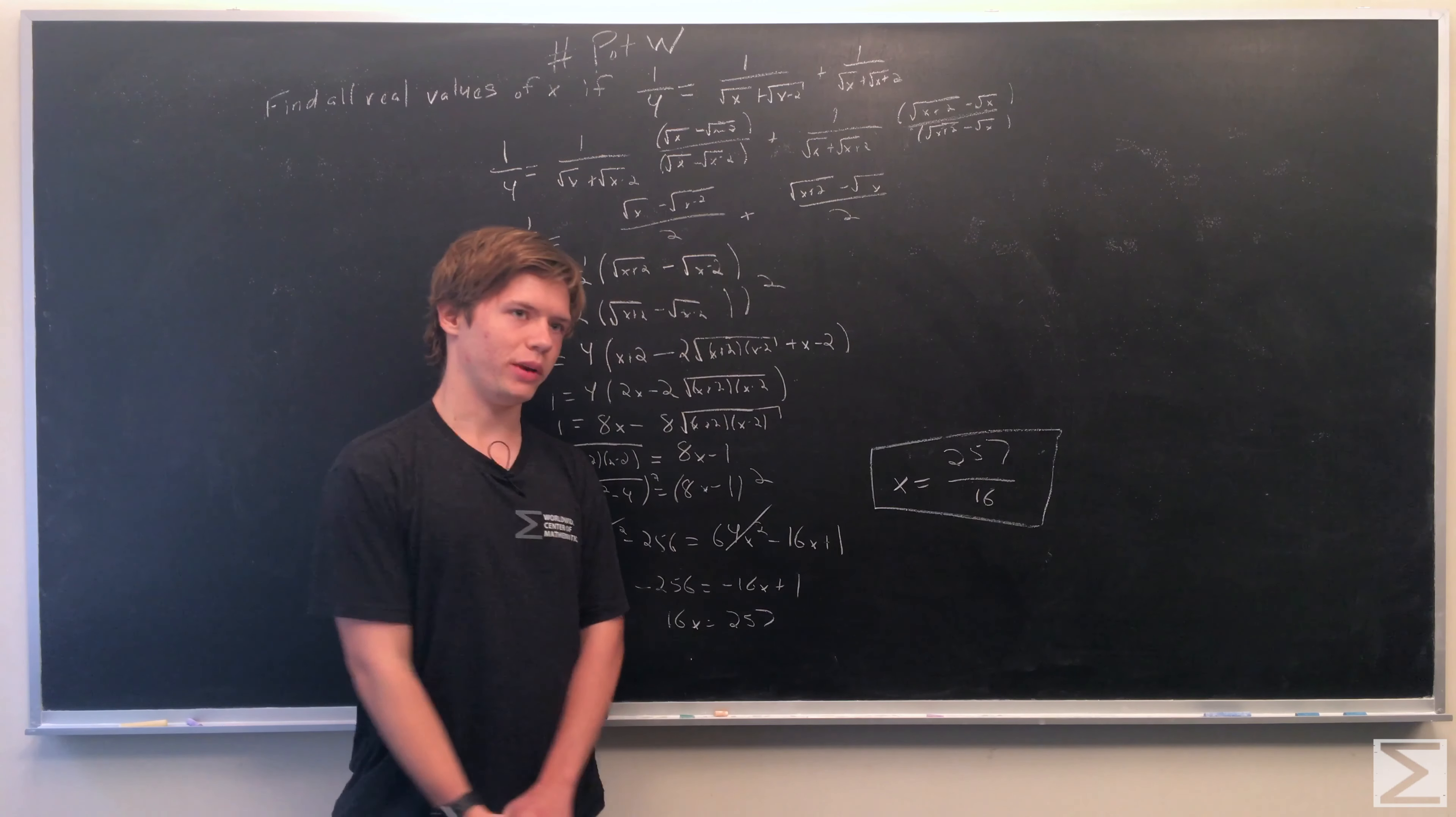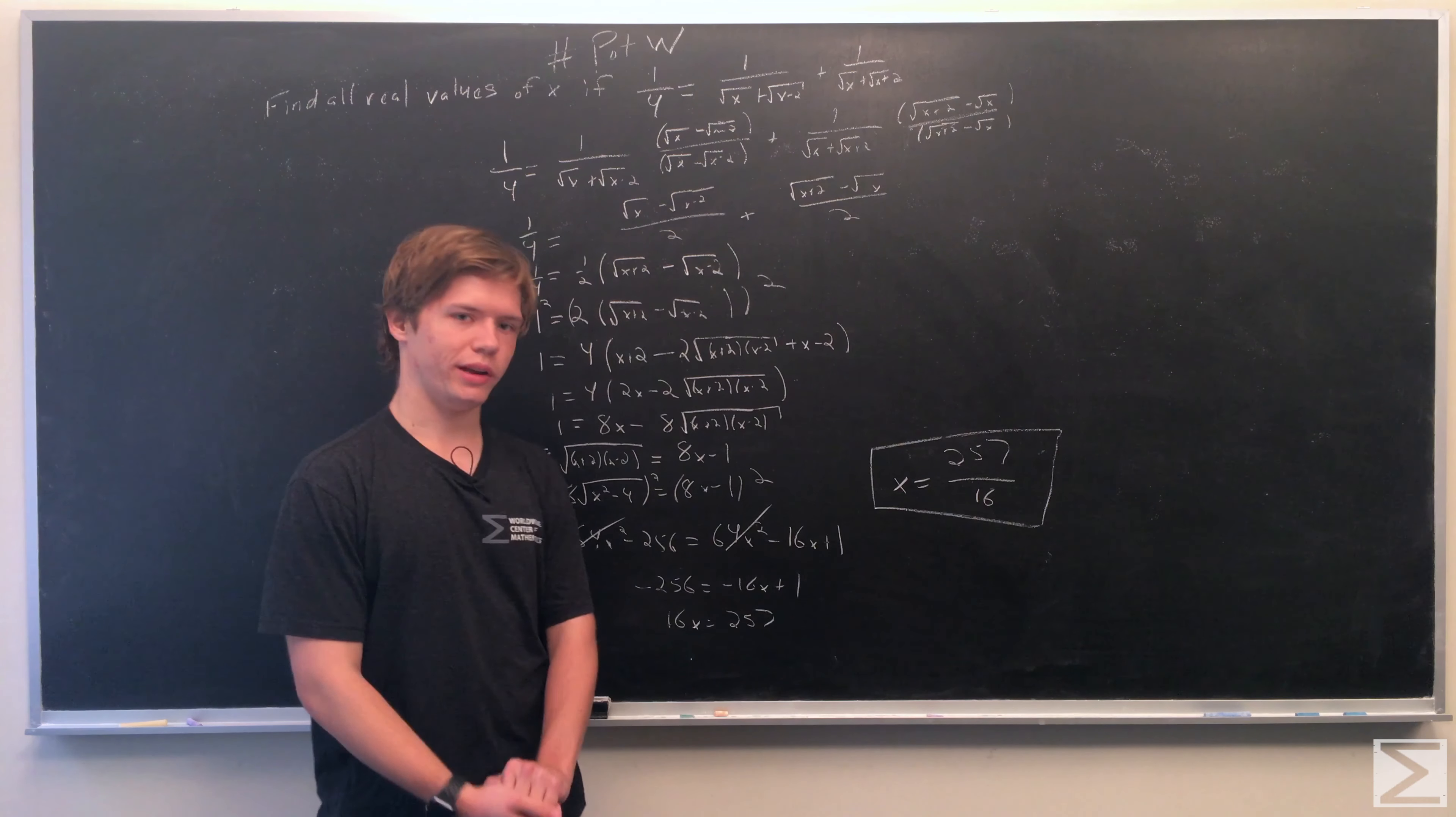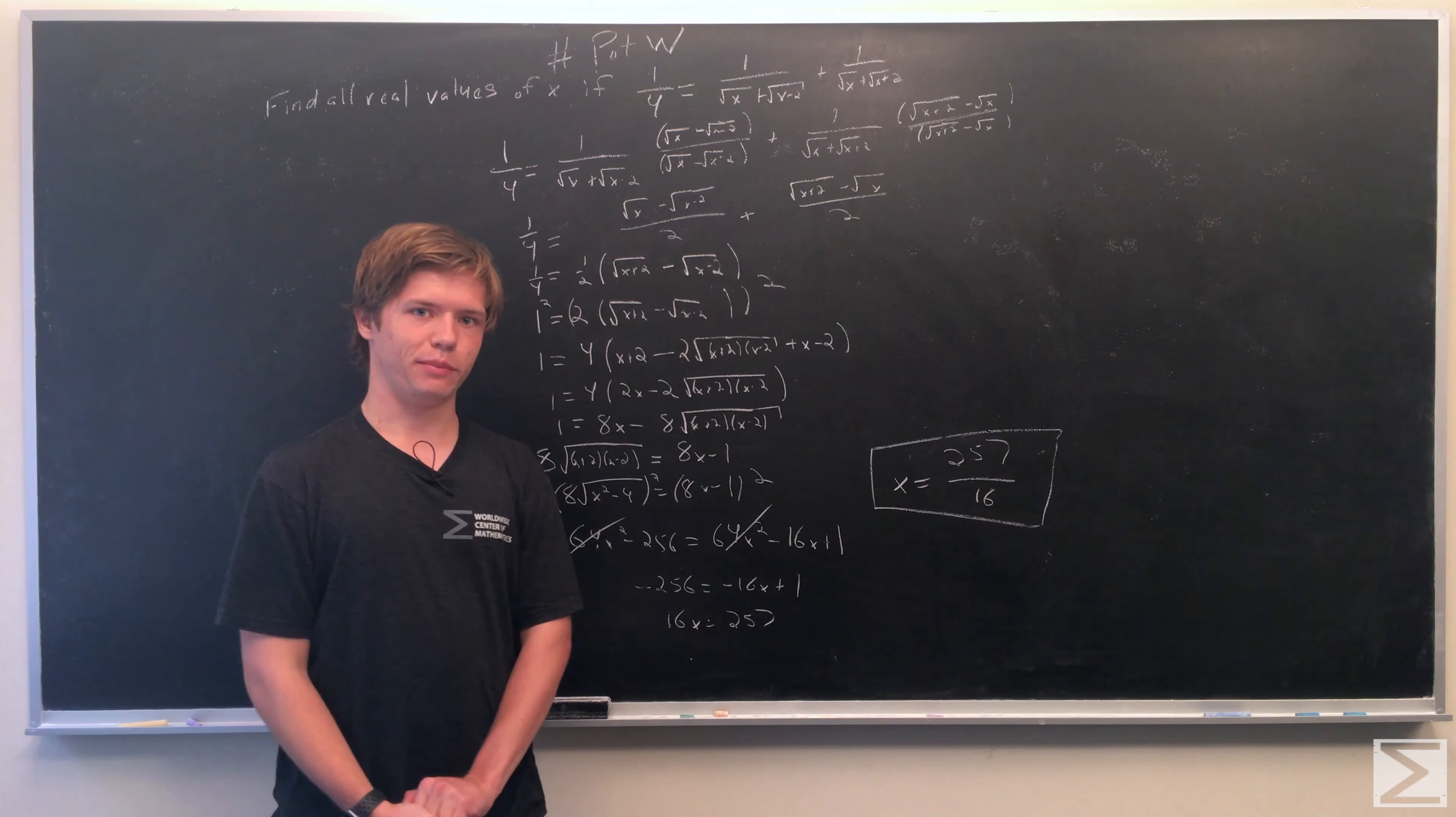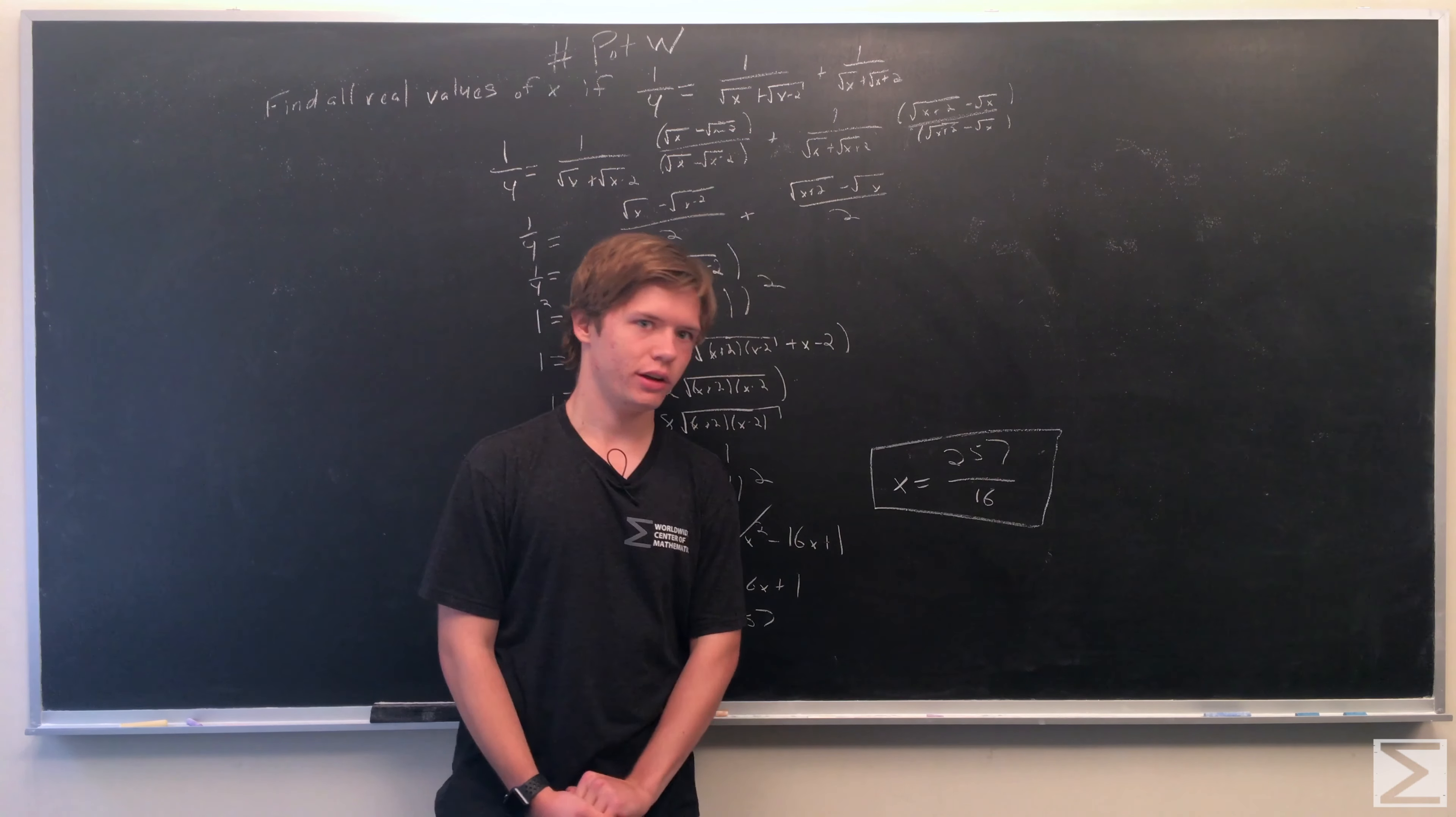Now we solve for x. With the 64x² terms cancelled, we have -256 = -16x + 1. Subtracting 1 from both sides and dividing by -16 gives us x = 257/16.